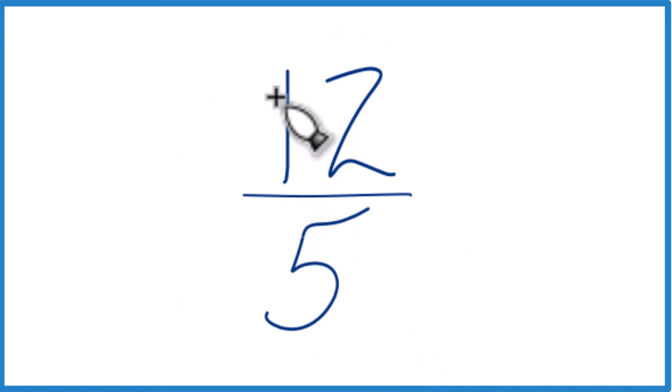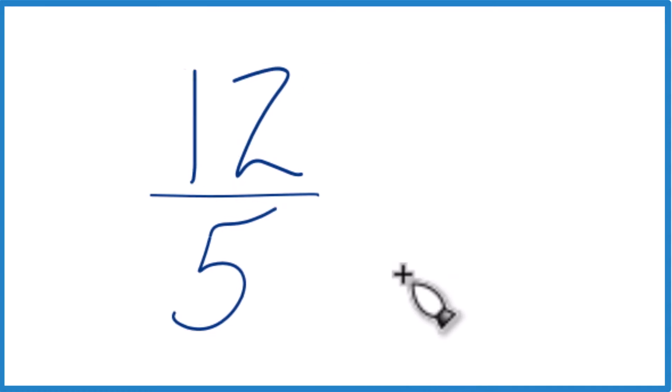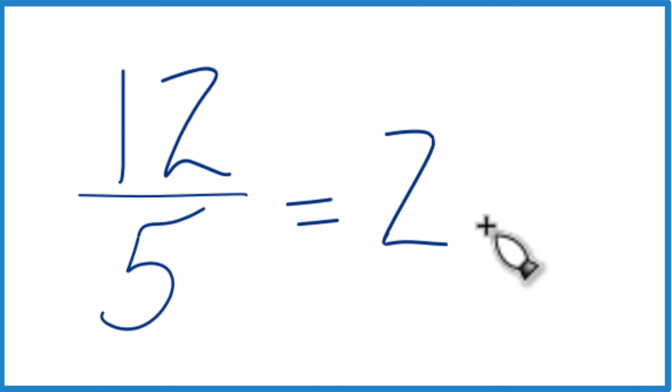You could just take 12 divided by 5 on a calculator, and if you do that you're going to end up with 2.4. So that's one way to do it.